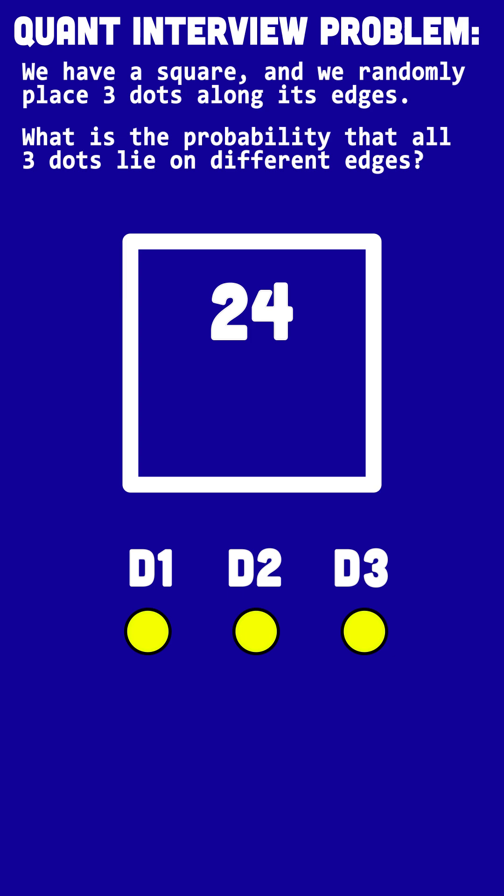Again, I can place dot one along any of the four edges. Dot two can also be placed on any of the four edges. Dot three can also be placed on any of the four edges. Total possible outcomes: four times four times four, 64.